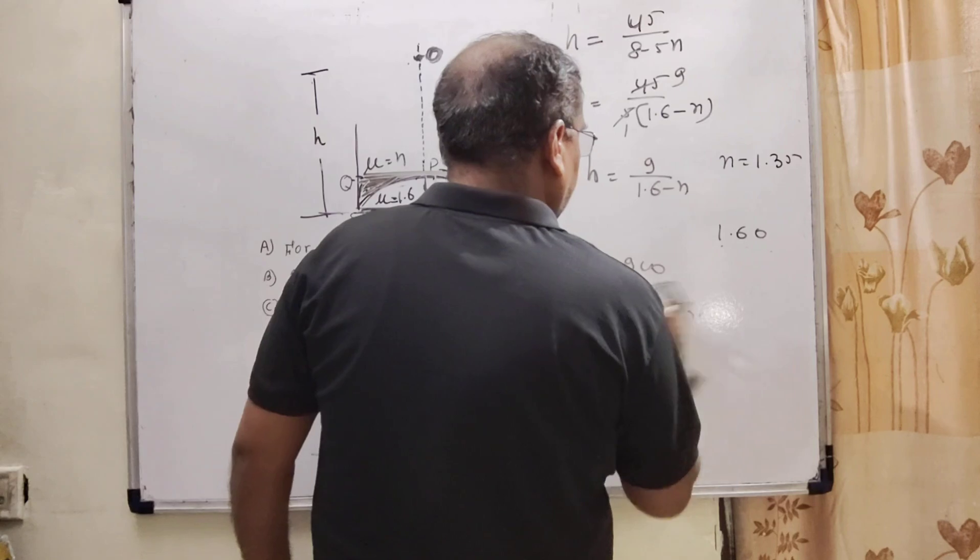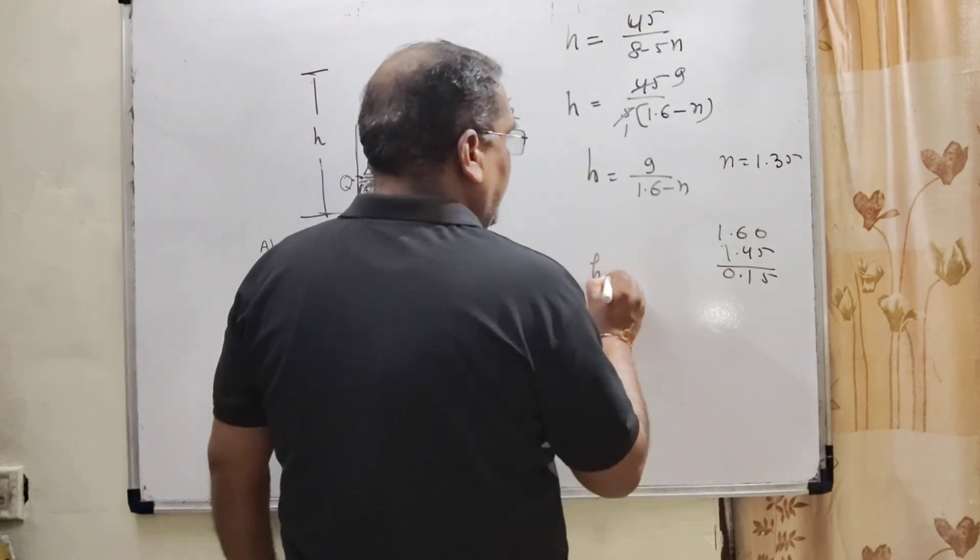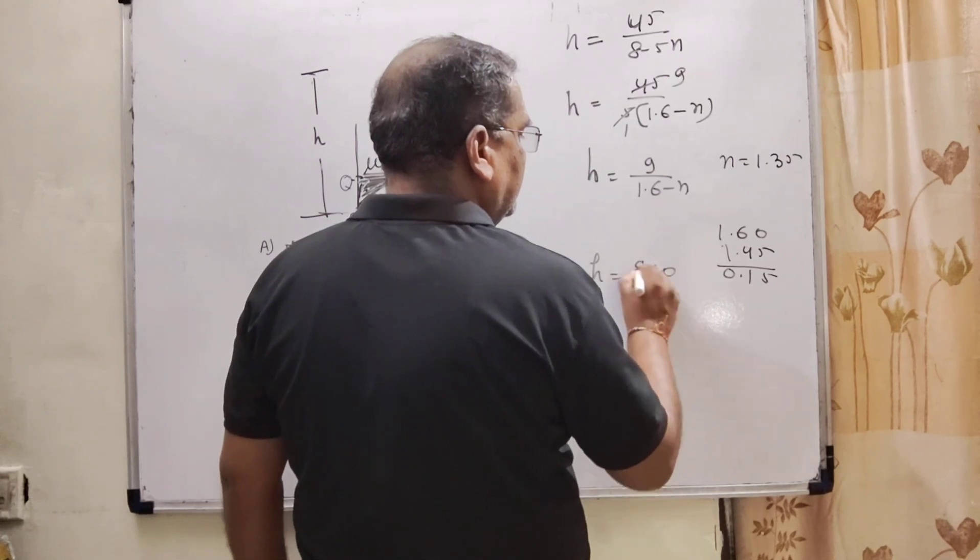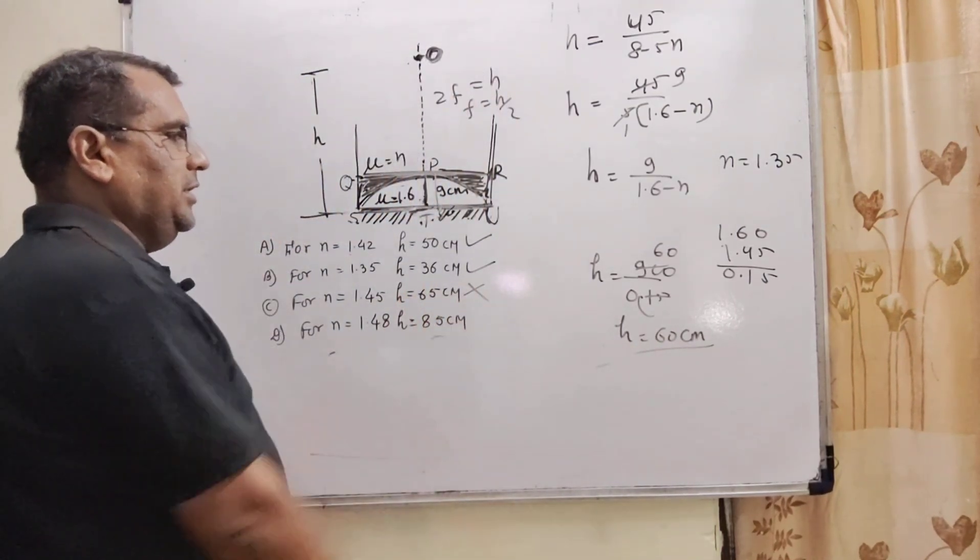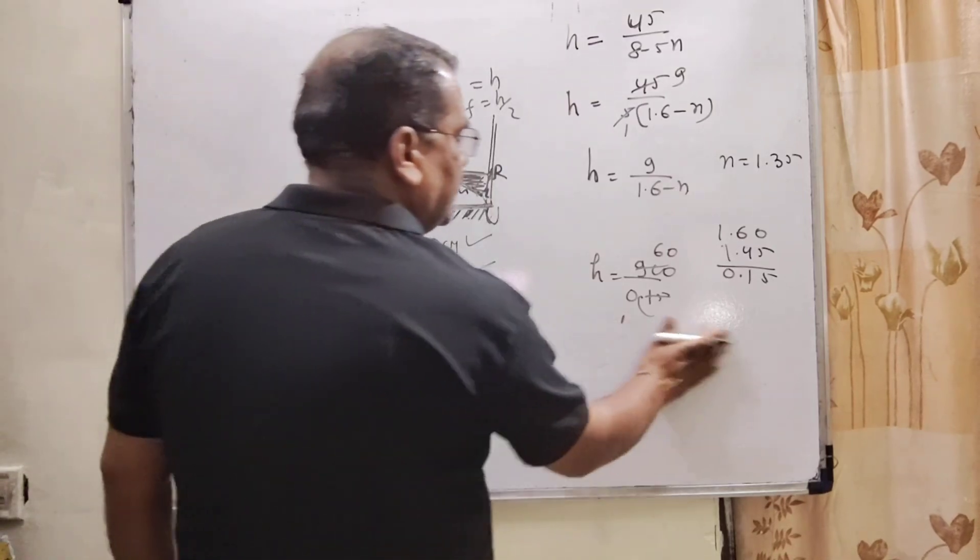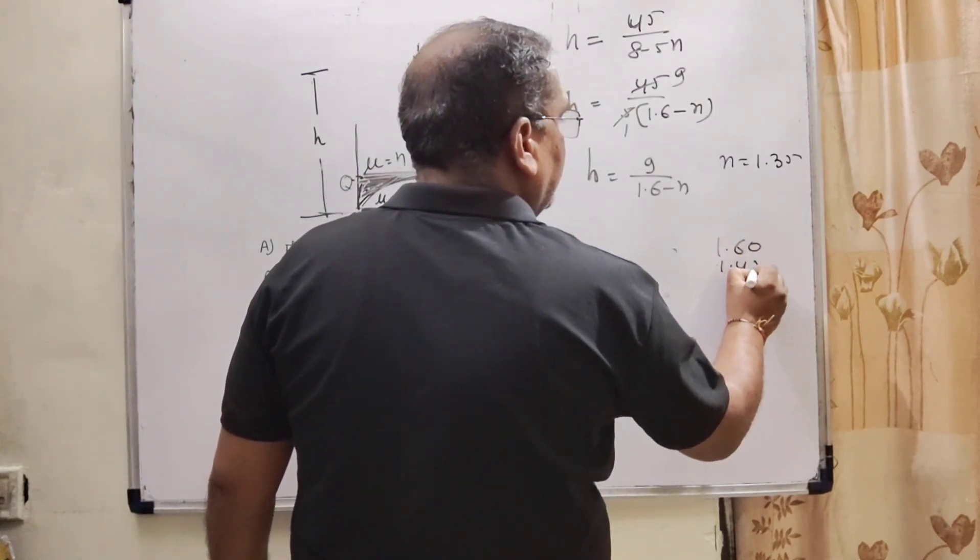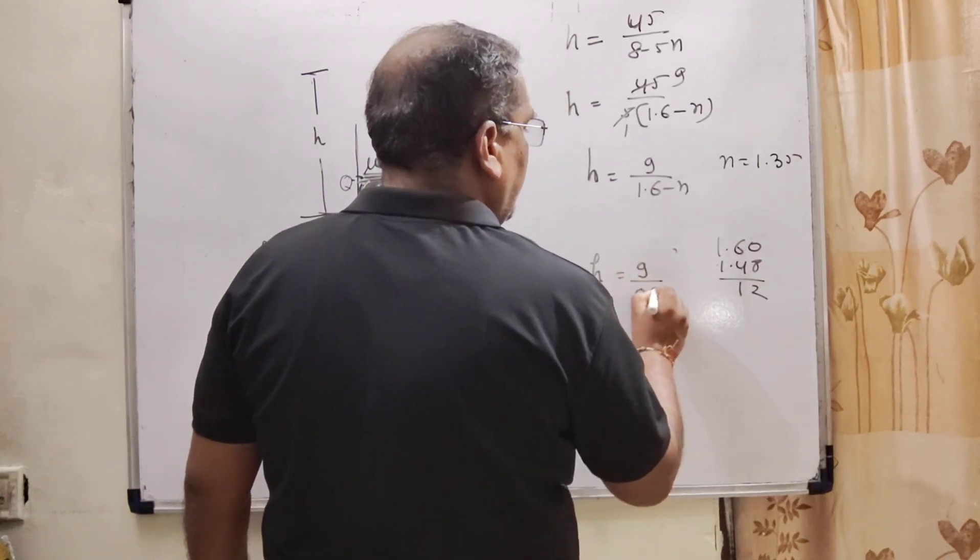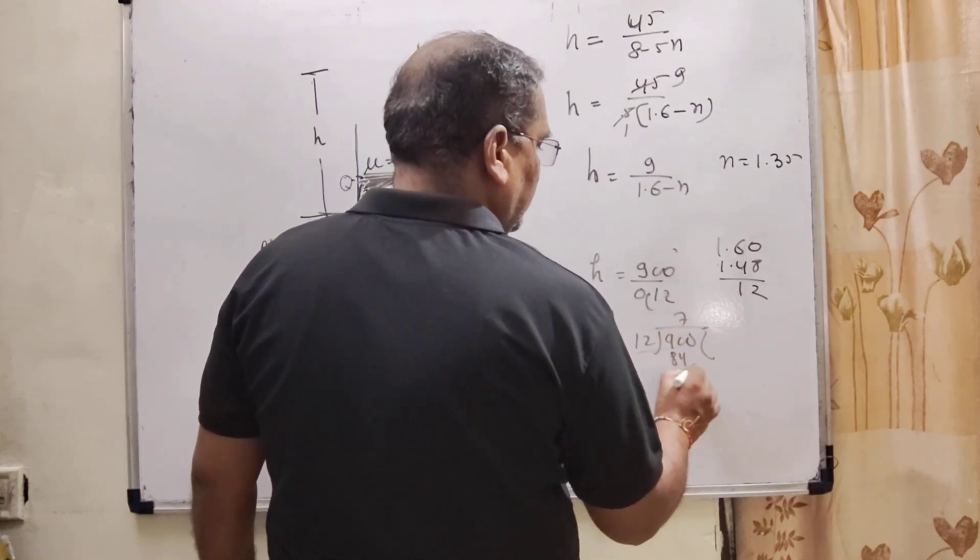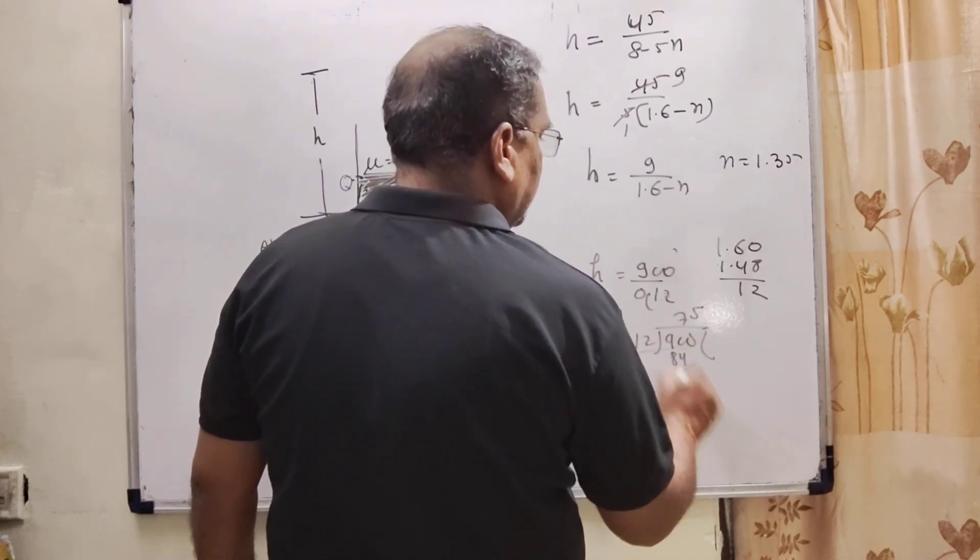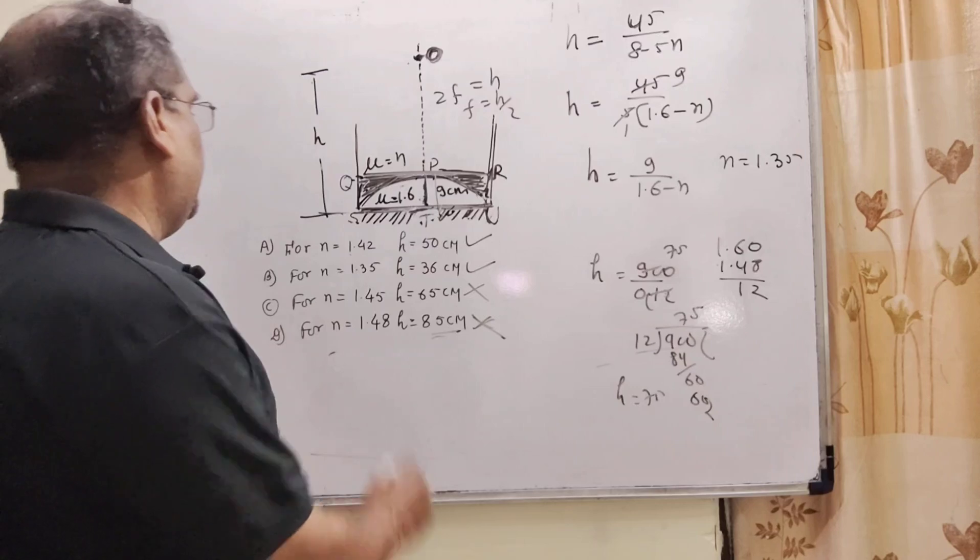Now put n equals 1.45. So h equals 9 upon 0.15, which gives h equals 60 centimeters. But here the option given is wrong. Next, for n equals 1.48, h equals 9 upon 0.12, which gives h equals 75 centimeters. Here the option given is 85, so this option is also wrong. Therefore, the correct options are A and B. I hope you understood this question. Thank you.